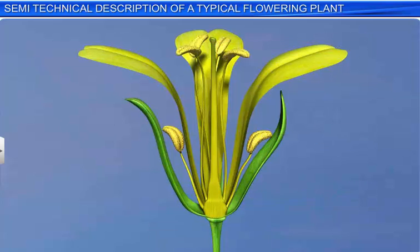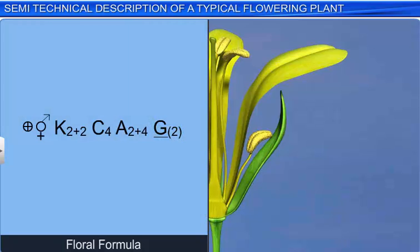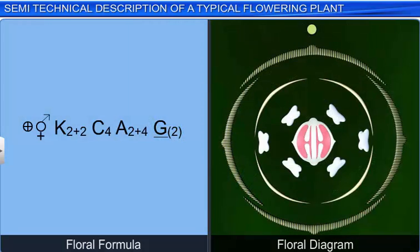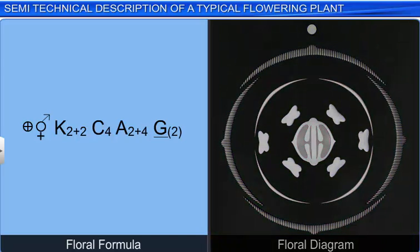The description of vegetative and floral characters is followed by a floral formula and floral diagram, which represent the floral description in condensed form. The floral formula is represented by a set of symbols.